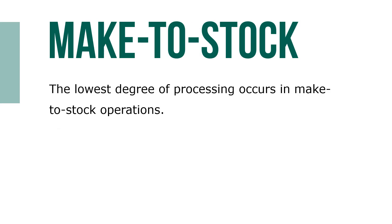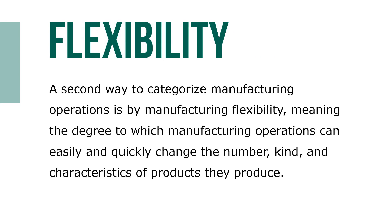The lowest degree of processing occurs in make-to-stock operations. These products are standardized, meaning that each is exactly the same as the next. A company using a make-to-stock operation starts ordering parts and assembling finished products before receiving customer orders.